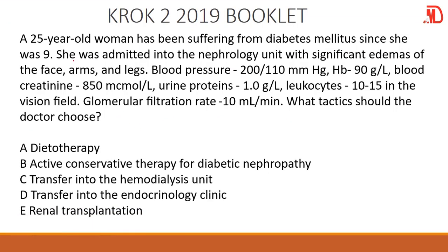So we have a 25-year-old woman suffering from diabetes since she was nine, and now she has been admitted at the nephrology unit for edema, high blood pressure, and proteinuria — that is more or less like a nephrotic syndrome — accompanying with a decreased GFR, that's glomerular filtration rate. The normal rate is about 90 to 120 milliliters per minute.